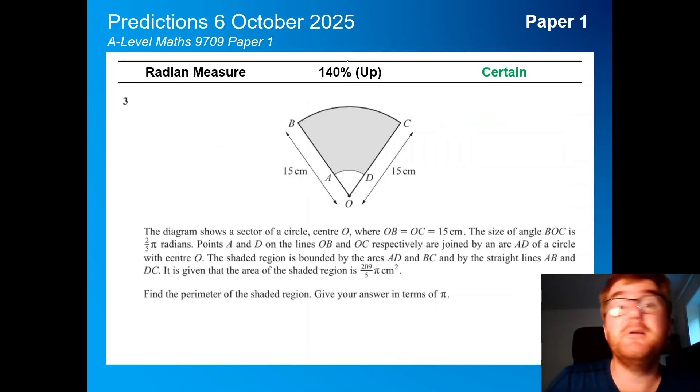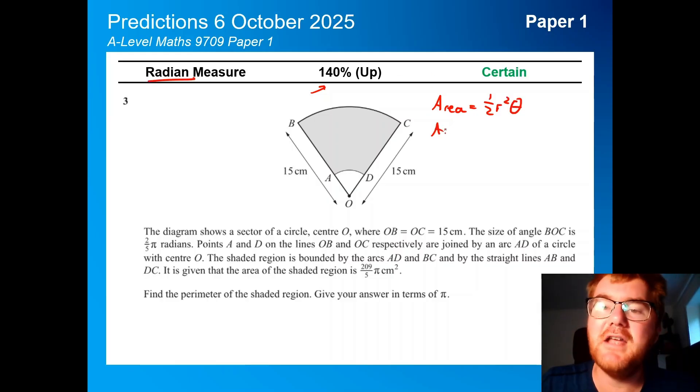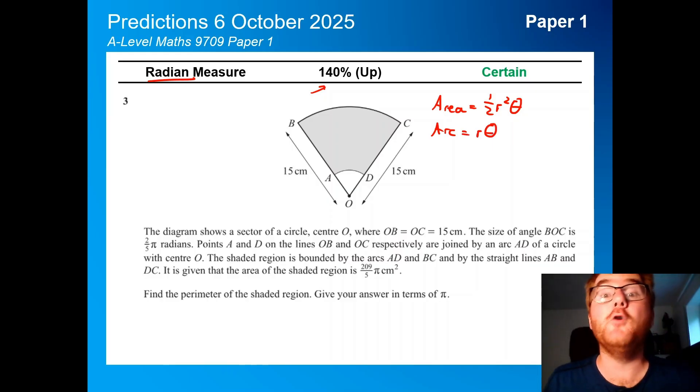Radian measure, again, pretty much comes up every year, or sometimes one and a half, that kind of idea. This is a very typical question. Some sort of sector usually, or can be a compound shape as well. It gives you a variety of different information. You might have to work backwards. So knowing the formula of the area of a sector, so a half r squared theta, the arc being r theta, essentially want you to be able to work with those formulae very comfortably using radians.